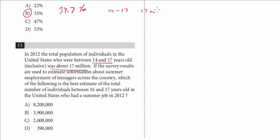So this is the whole population, there are 17 million. And the survey, remember the survey is just part of the whole population. The results are used to estimate information about summer employment of teenagers. And we want the best estimate of the total numbers of 16 and 17 year olds who had a job in 2012. So it's kind of tough because I'm going to go back up and look at the graph. But remember 14 to 17, this is the total population of all of the people. The survey is just a small sample. We want to take the sample results of 16 and 17 year olds who had a job to now predict the total number of that based on the 17 million.